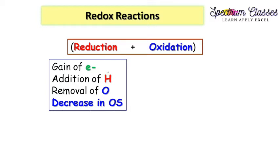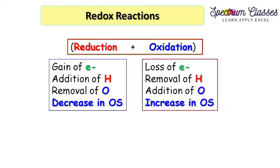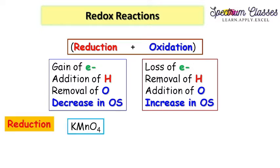Opposite to reduction, oxidation is the loss of electrons. In oxidation: removal of hydrogen takes place, addition of oxygen takes place, and there is an increase in oxidation state. Oxidation is simply the reverse of reduction. To understand how this works, suppose we have KMnO4 as one of the reactants — and we all know that KMnO4 is a very strong oxidizing agent.